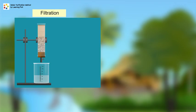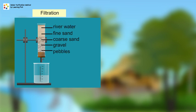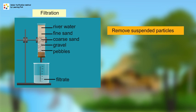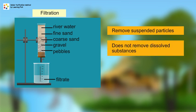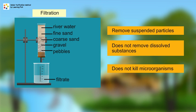Filtration is carried out using layers of fine sand, coarse sand, gravel, and pebbles. The liquid that passes through the filter is called filtrate, and the solid trapped in the filter is called residue. This method removes suspended solid particles, but does not remove dissolved substances and does not kill microorganisms.